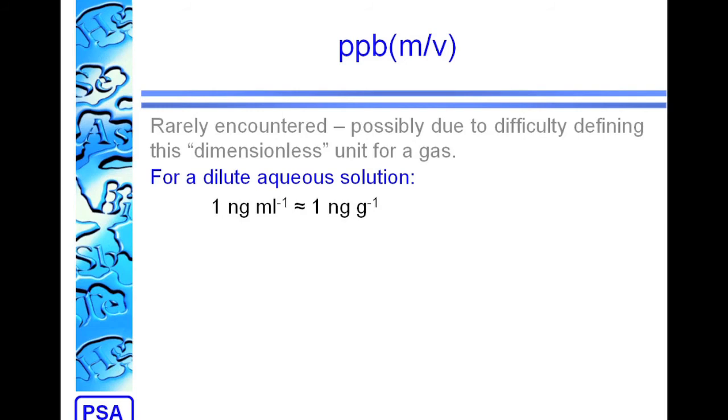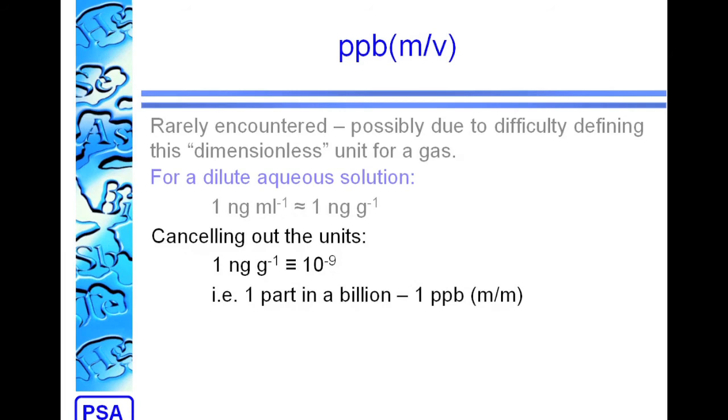For a dilute aqueous solution, where the density is approximately 1 gram per milliliter, we can say that 1 nanogram per mil is approximately the same as 1 nanogram per gram. If we take 1 nanogram per gram and cancel out the units, we end up with 1 in a billion, or 1 part per billion, 1 PPB, on a mass-mass basis.